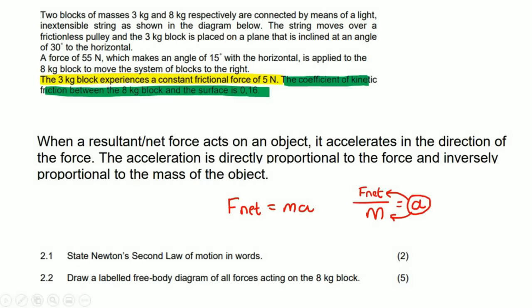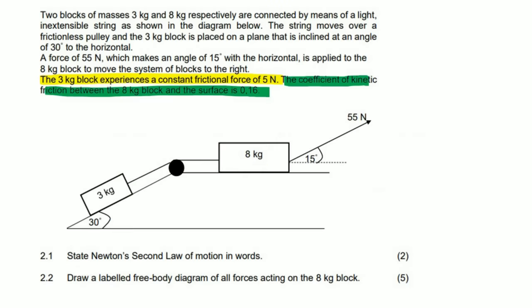The proper definition: when a resultant or net force acts on an object, it accelerates. This acceleration is directly proportional to the force and inversely proportional to the mass. Next question: draw a free body diagram of all the forces acting on the eight kilogram block — and it's for five marks.